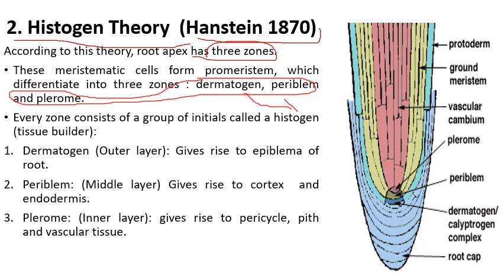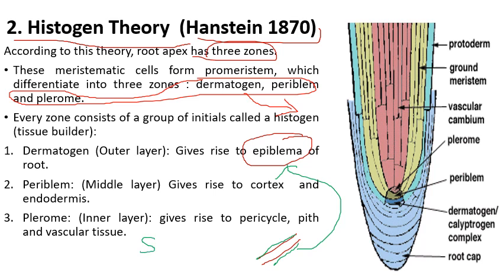The outermost layer, dermatogen, will give rise to epiblema. This epiblema is present in young roots, which have thin-walled cells. In shoot or leaf, the outer layer is covered by epidermis, but in the case of root, young roots are covered by another layer called epiblema. Next to dermatogen, there is another layer called periblem, the middle layer.